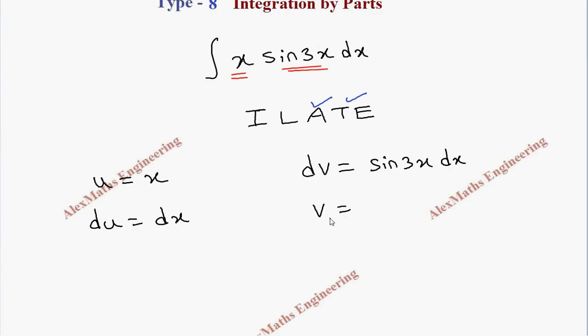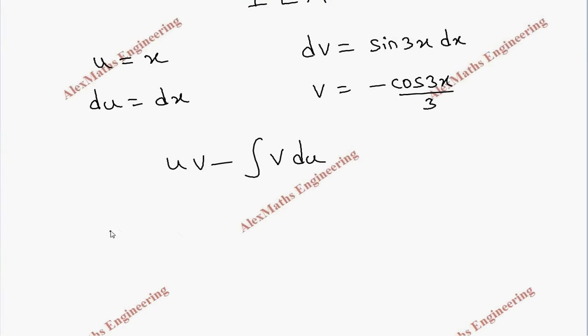From this we can integrate and find v. Integration of sine 3x is minus cos 3x by 3. The formula is uv minus integral v du. Let's substitute. So x into minus cos 3x by 3 minus integral v is minus cos 3x by 3 into dx.